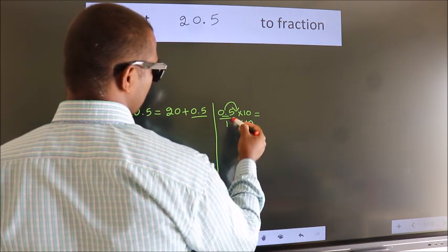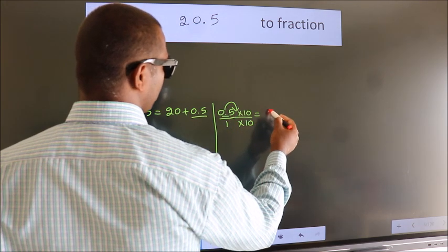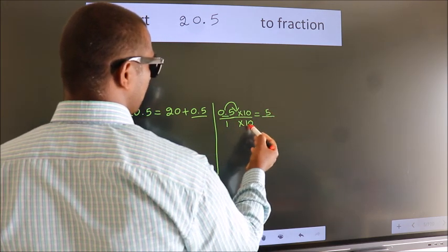Next, 0.5 into 10 is 5. 1 into 10 is 10.